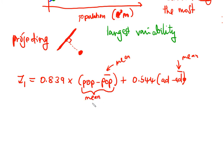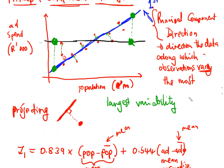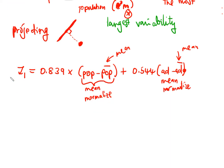We're doing mean normalization — we saw this before where we normalize the data using the mean. Why? Because if you look at our data, the population is measured in millions and the ad spend is measured in thousands. Those different scales can be very difficult for our machine learning models, so here we're basically just mean normalizing.